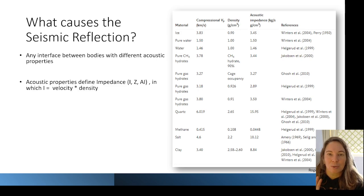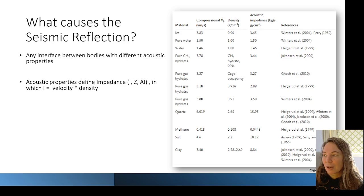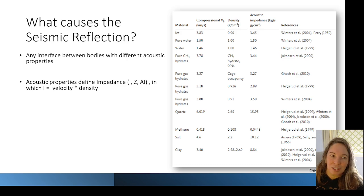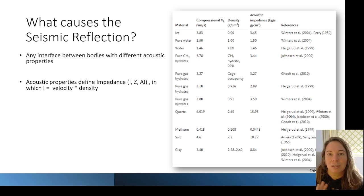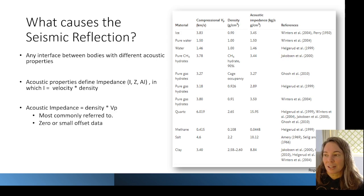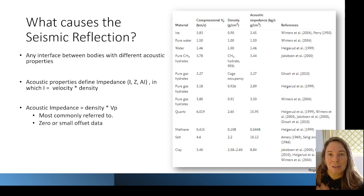These reflections are dependent on the acoustic properties of the rock layers, sometimes called I, Z, or AI depending on the textbook or reference you're using, which is the velocity times the density. Specifically for acoustic impedance, that's the P-wave velocity.